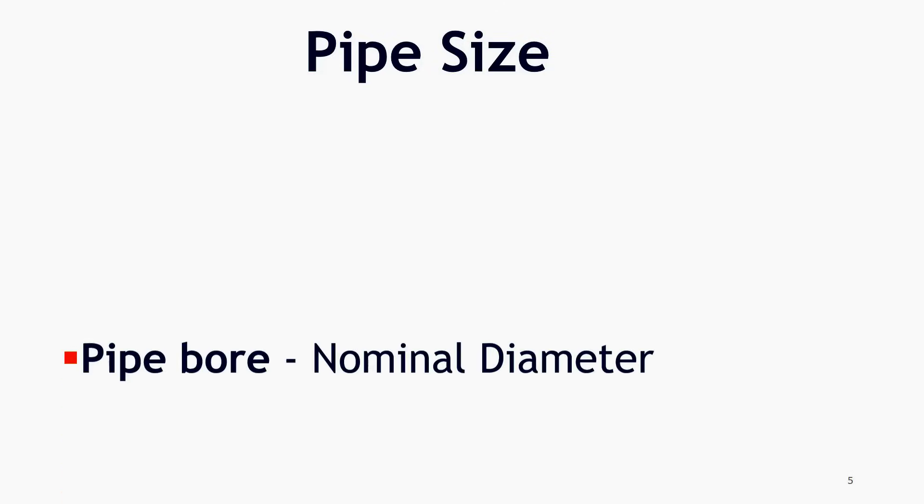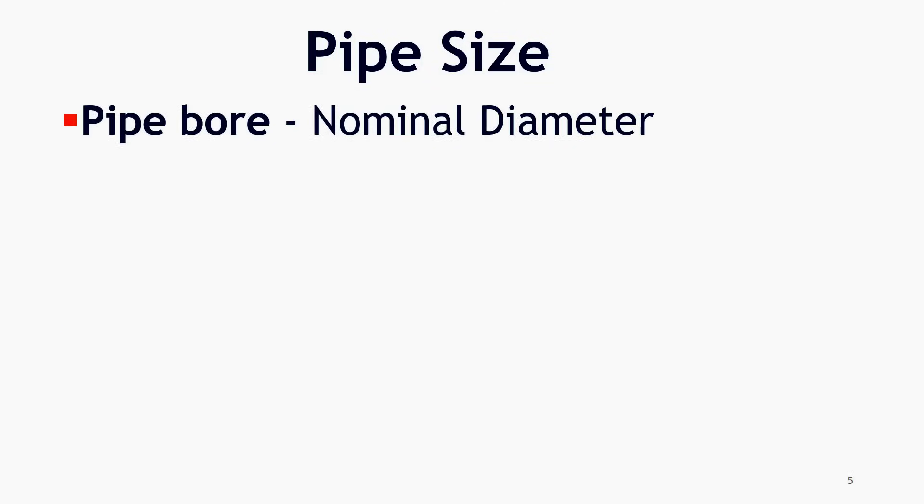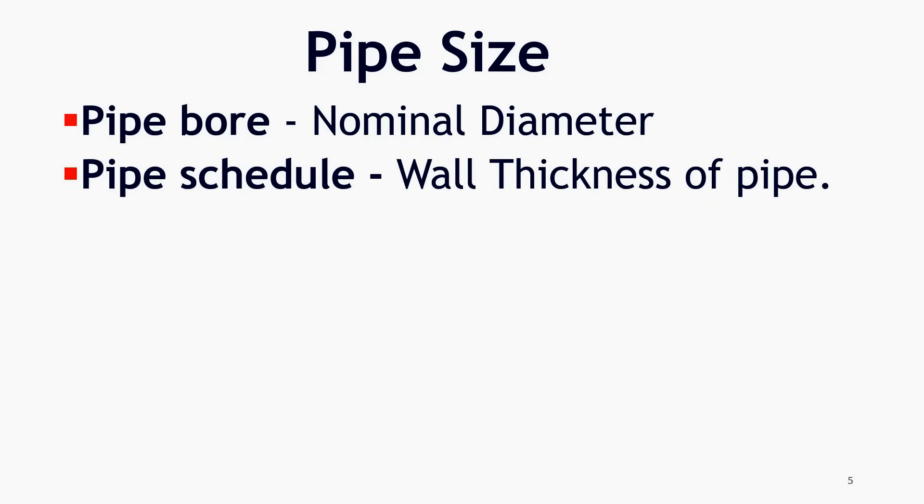In current practice, pipe size is defined with two sets of numbers: pipe bore, which is also known as nominal diameter, and pipe schedule, which is nothing but wall thickness of pipe.